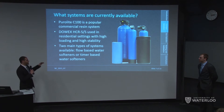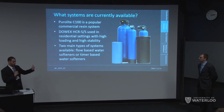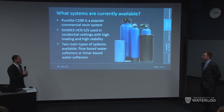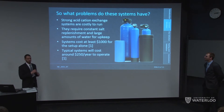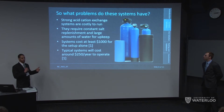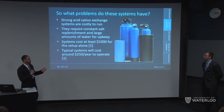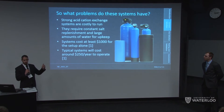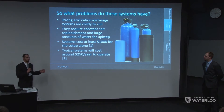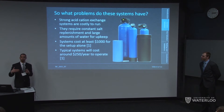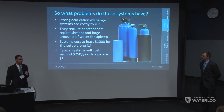In flow-based systems, the system regenerates whenever a certain volume of water passes through, whereas timer-based systems regenerate at given time intervals. This raises a couple of issues: you constantly have to exchange, which is costly. Setup costs at least $1,000 for low-end systems, and higher-end systems cost upwards of $2,000 to $3,000, with maintenance alone costing at least $250 per year — potentially up to $400 or $500 a year.